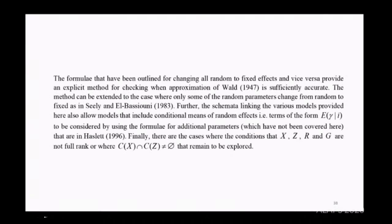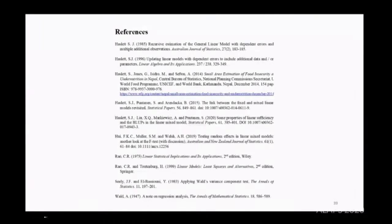We've now got an explicit method for checking whether the approximation of Wald is sufficiently accurate. The method can be extended to the case where only some of the random parameters change. Those extensive schemata I've provided that link the various models will allow models that include conditional means of random effects, terms of the expected value of gamma given the labels. They can be considered using the formula for additional parameters in Haslett 1996. Finally, there are cases where conditions of full rank or where the intersection of the column spaces isn't zero that remain to be explored.